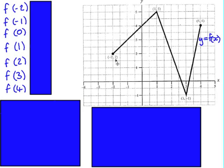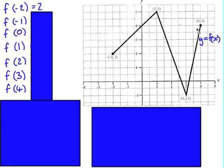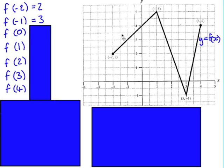When we plot a graph and have pairs of coordinates, this is the result of applying a function. The coordinates negative 2, 2 mean that when we input a value of negative 2, the output of the function is 2. Another way of saying that is f of negative 2 is 2. When we apply an input value of negative 1, the output is 3, so f of negative 1 is 3.